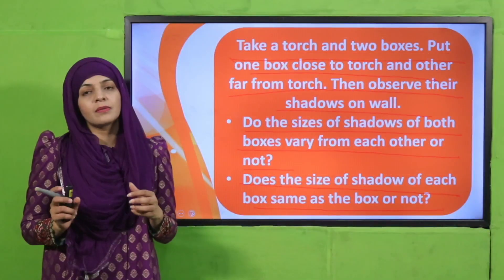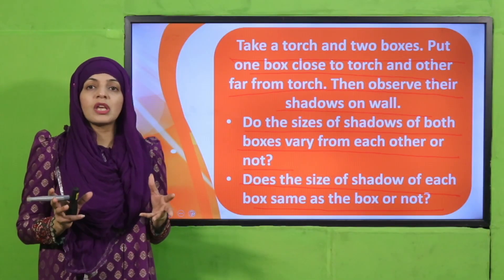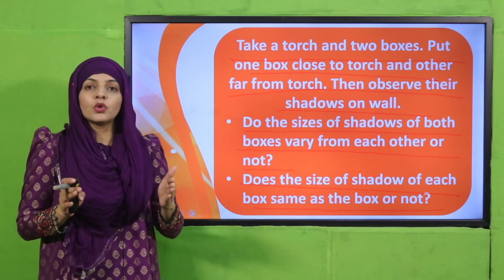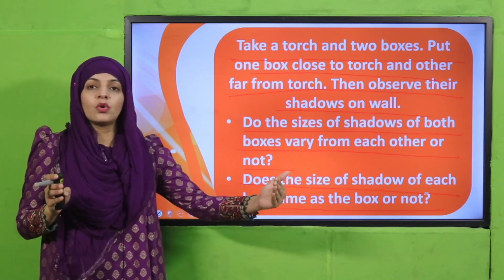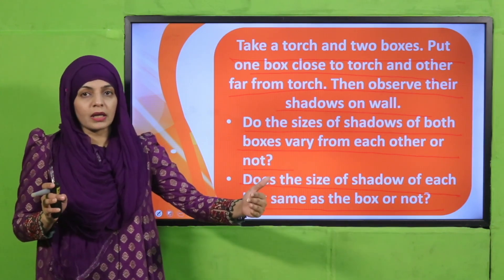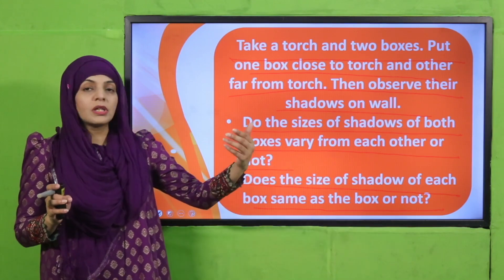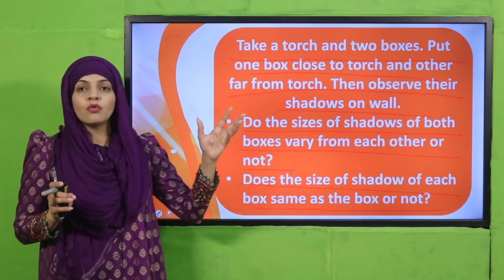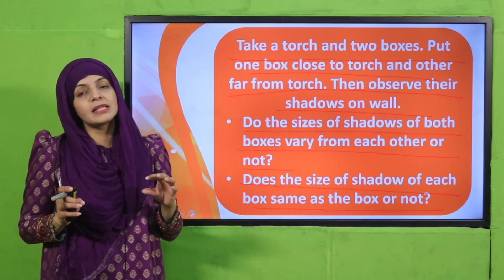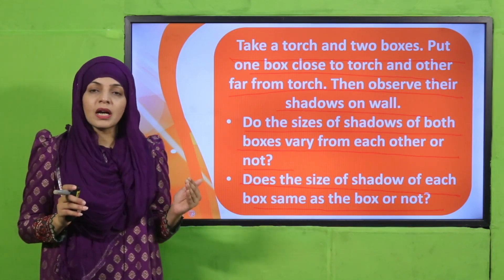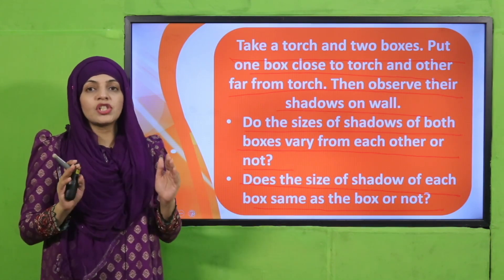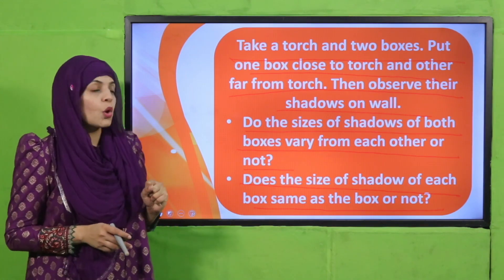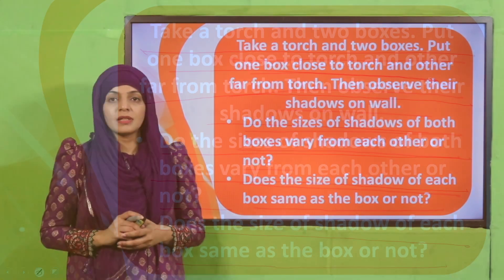You have to take a box and a flashlight and do shadow formation — keep one box close to the torch and one farther away. Observe whether the shadow's shape and size are exactly the same. Quickly pause the video and do this activity.